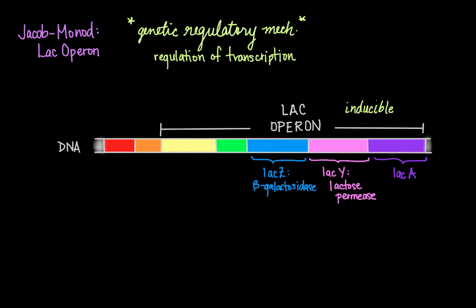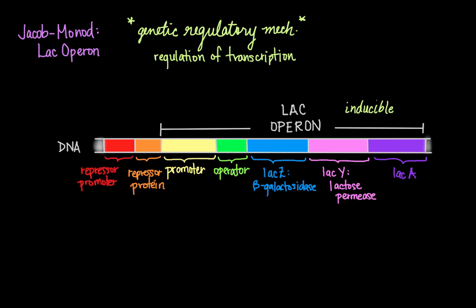Besides these three structural genes — LAC-Z, Y, and A — there are two regulatory sequences contained in the LAC operon: the promoter, which promotes the transcription of structural genes, and the operator. There are also two other regulatory sequences just upstream of the LAC operon: a gene encoding a repressor protein, and its associated promoter. These are the structural genes, and those upstream elements are the regulatory genes.